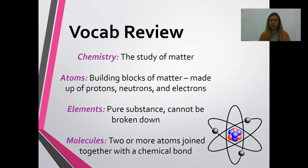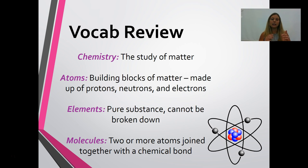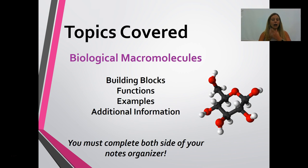I'm going to use the term elements a lot. Elements are pure substances that cannot be broken down — think about your periodic table of elements. Elements include things like carbon, hydrogen, oxygen, nitrogen, and phosphorus. Molecules are formed when two or more atoms are joined together with a chemical bond. Our topic today covers the four biological macromolecules important to living organisms.